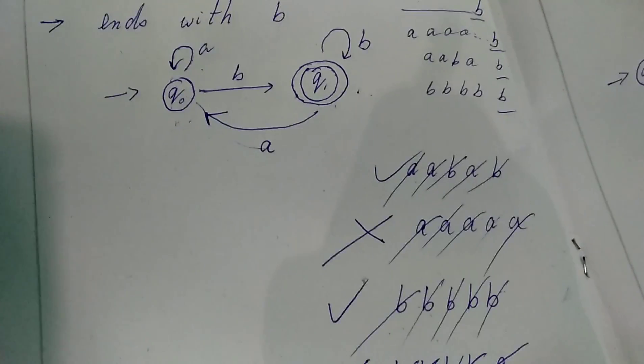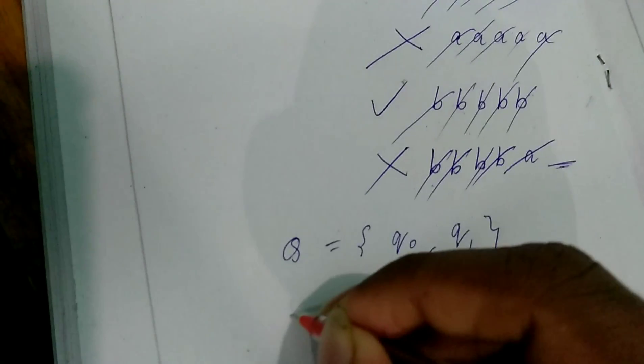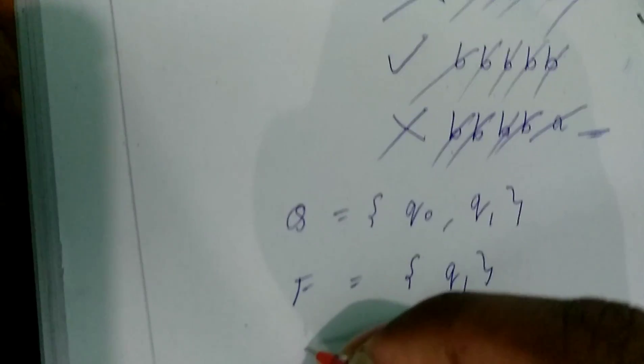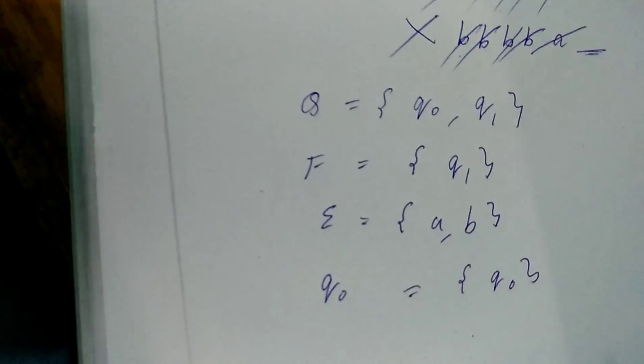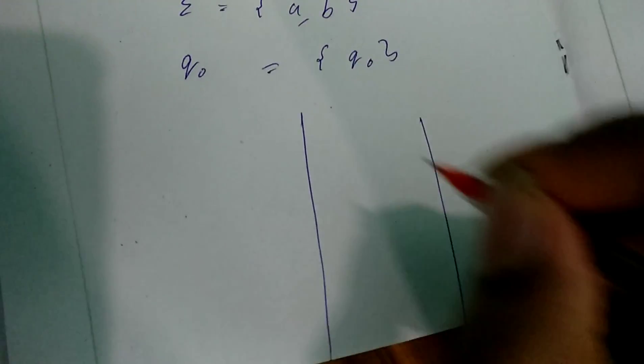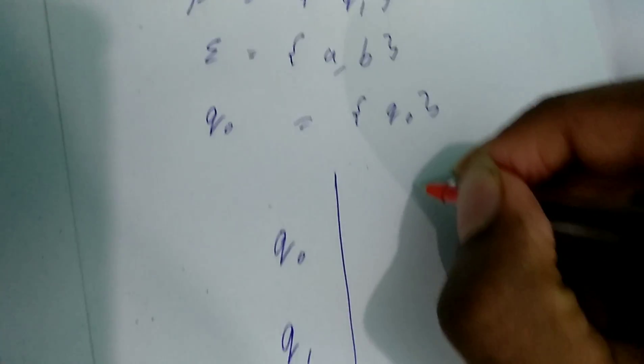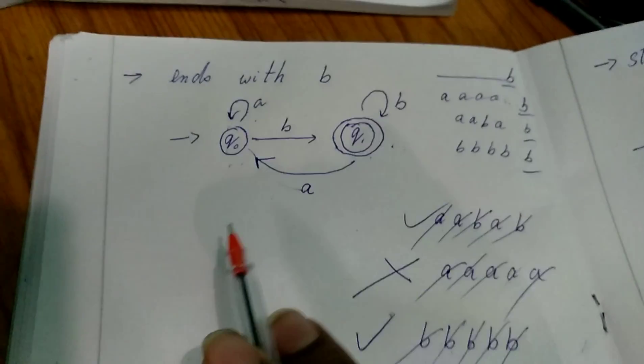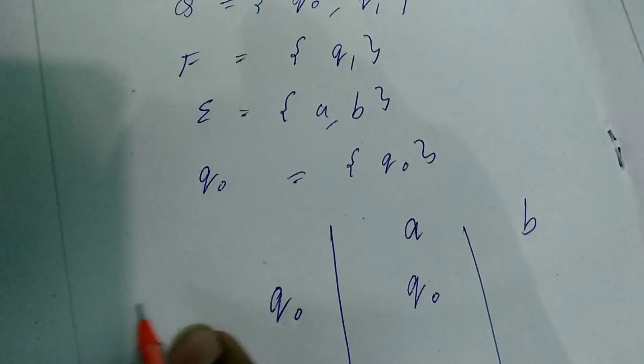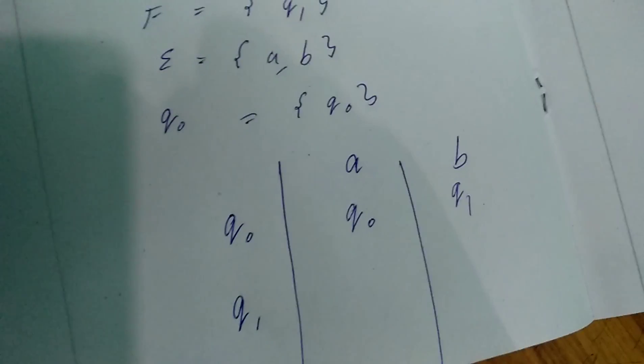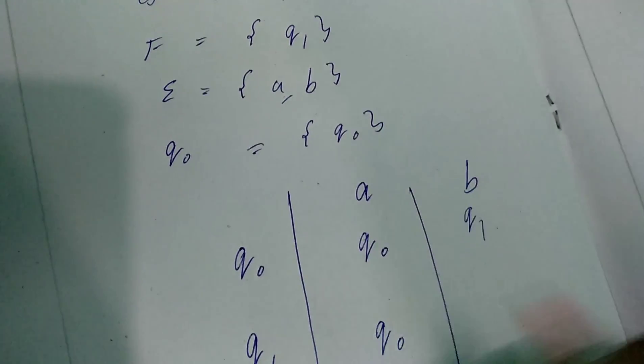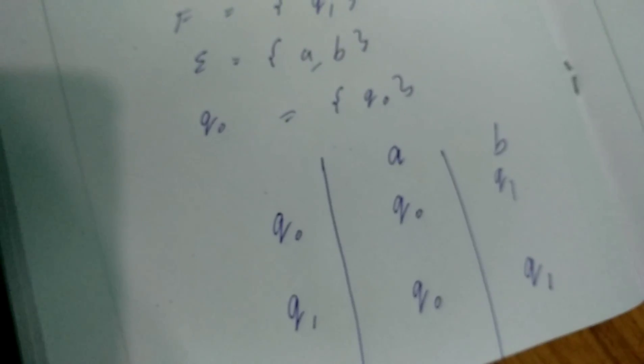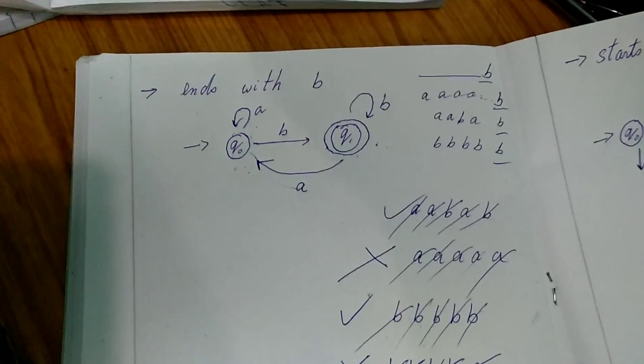And here, Q will be Q0, Q1. And the final state will be Q1. And sigma will be A, B. Initial state I took as Q0. And if you need transition table, then Q0, Q1 are the states, inputs A, B. At Q0, A, we are reaching Q0, same state itself. Q0, B, reaching to Q1. Then Q1 to A, we are reaching back to Q0. Q1 to B, we are reaching same state. So this is for a string that is ending with B. Now let's see some other problems.